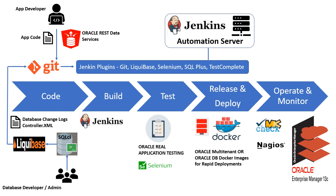This is very similar to what application developers do when they commit a change to a Git repository. This XML file is like a database source code file which can be included in your Git repository. Your application teams would now have end-to-end visibility of changes performed in both application and database by looking at a single source of truth, which is Git. So the first place to start with your Oracle database DevOps initiative is database source code and version control management, easily achieved through SQL CL and Liquibase.